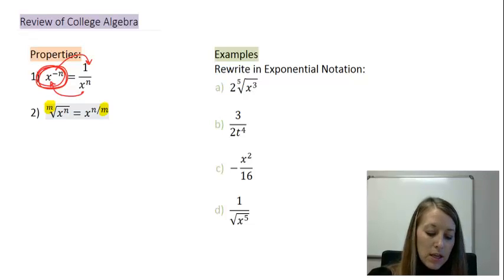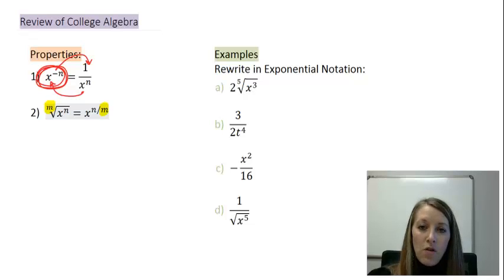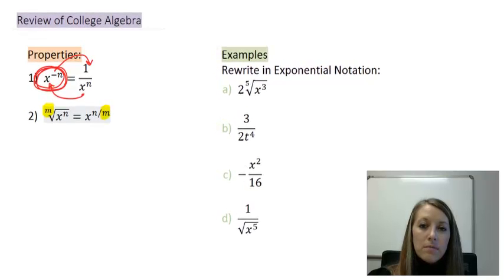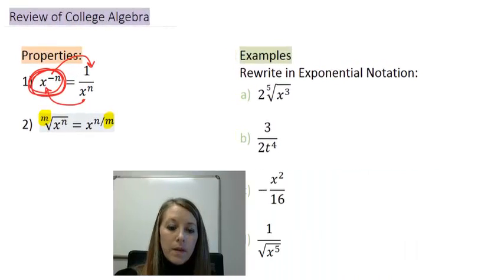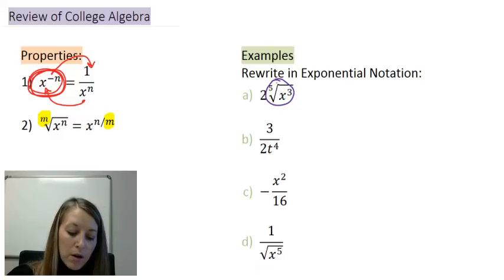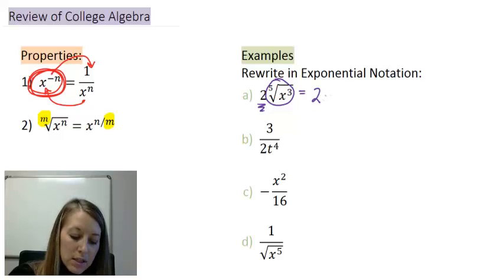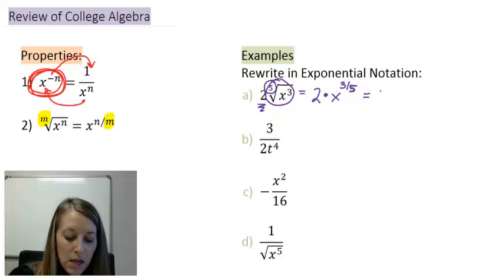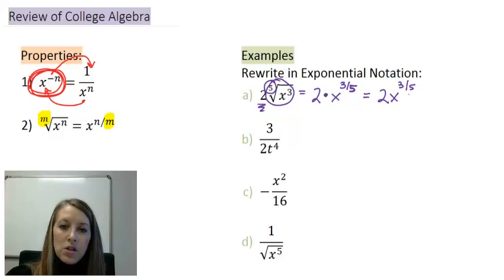Let's look at these examples — I suggest you pause the video to see if you can rewrite them into exponent format without taking any derivatives. For part A, the fifth root of x to the third power: we have a 2 out in front that stays out in front, so that becomes 2 times x to the three-fifths power. Whatever is in the root goes into the denominator of the exponent. Simplified: 2x to the three-fifths.